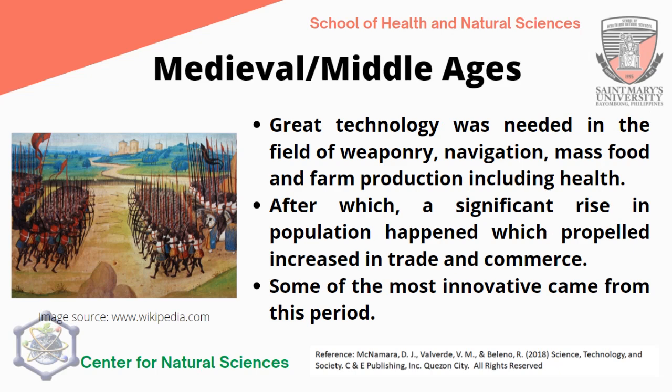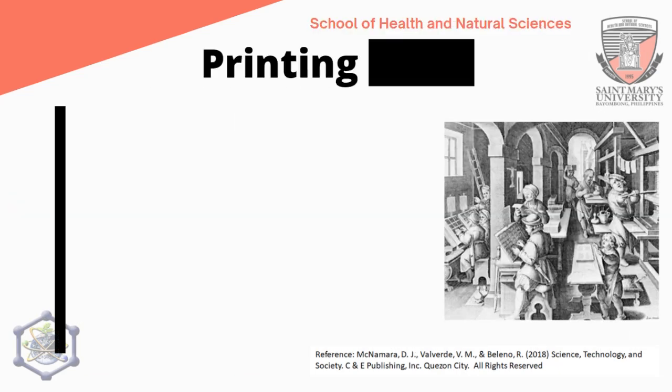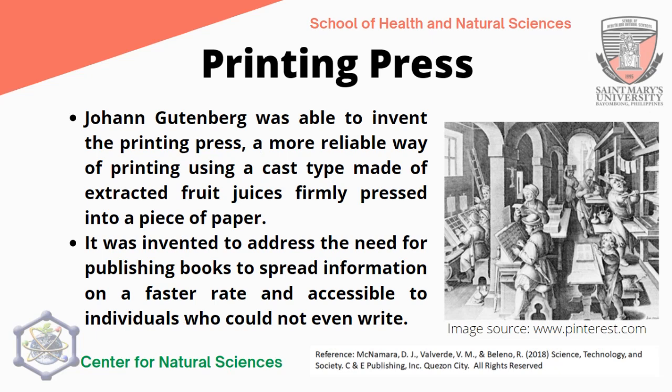Thus, technological advancements became prominent. Some of the most innovative inventions came from this period, such as the printing press. Johann Gutenberg was able to invent the printing press, a more reliable way of printing using a cast type firmly pressed into a piece of paper. Now there is a greater production of printed materials. It was invented to address the need for publishing books to spread information at a faster rate and accessible to individuals who could not even write, spreading media throughout the European region and around the world.